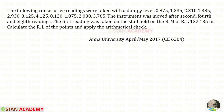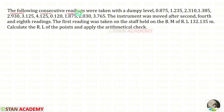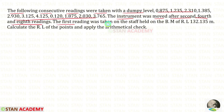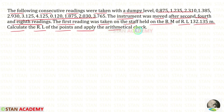Hello everyone. Today we are going to do a problem based on leveling. The following consecutive readings were taken with a dumpy level. The instrument was moved after the second, fourth, and eighth readings. The first reading was taken on the staff held on the benchmark of reduced level 132.135 meters. Calculate the reduced level of the points and apply the arithmetical check.